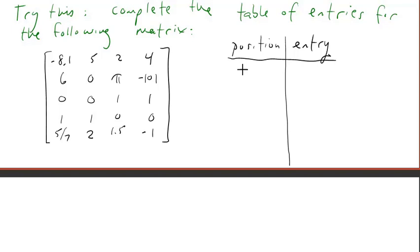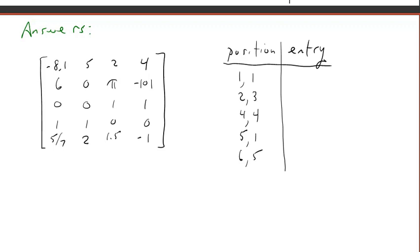Try this on your own. Complete the following table of entries for the following matrix: position 1, 1; the 2, 3 position; the 4, 4 position; the 5, 1 position; the 6, 5 position. Put the video on pause, and we'll check answers after you unpause.